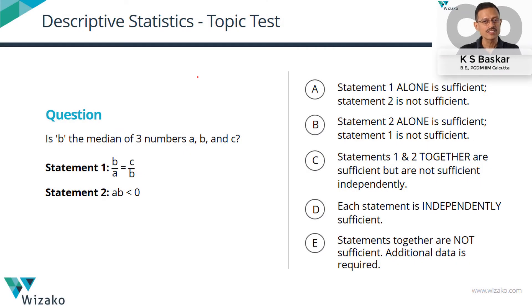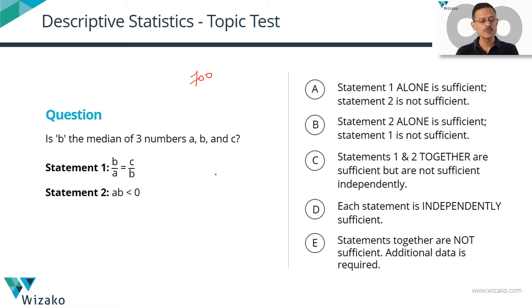This is a brilliant question. I'll classify it as a 700-level question. The question asked is: Is B the median of three numbers A, B, and C?